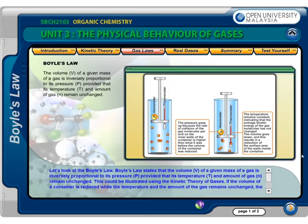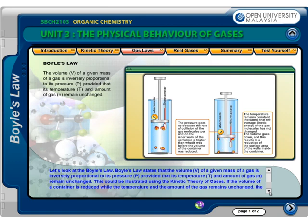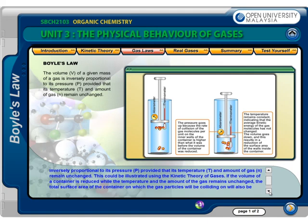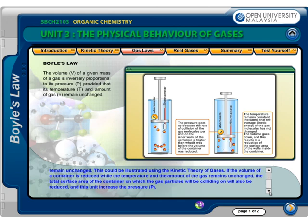Let's look at Boyle's Law. Boyle's Law states that the volume, V, of a given mass of a gas is inversely proportional to its pressure, P, provided that its temperature, T, and the amount of gas, N, remain unchanged. This could be illustrated using the kinetic theory of gases. If the volume of a container is reduced while the temperature and the amount of gas remain unchanged, the total surface area of the container on which the gas particles collide will also be reduced, and this will increase the pressure, P.